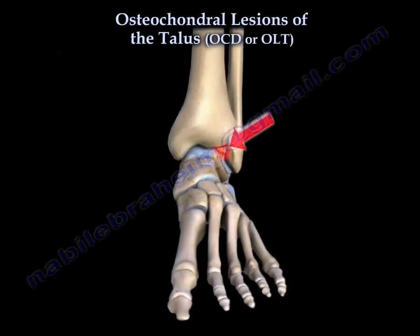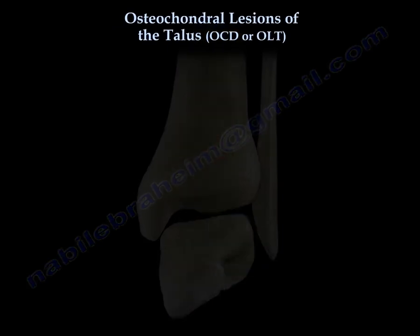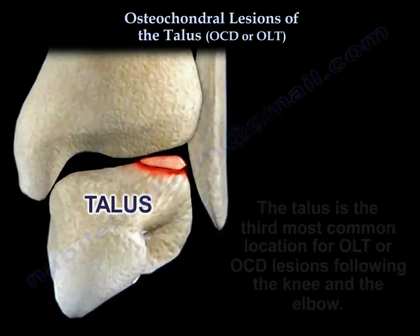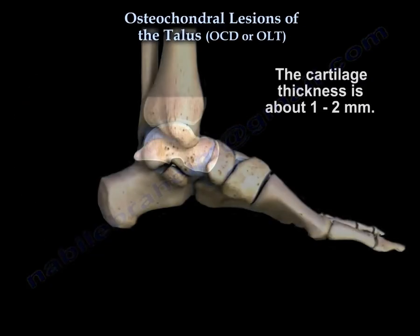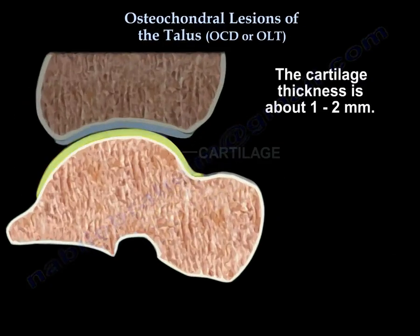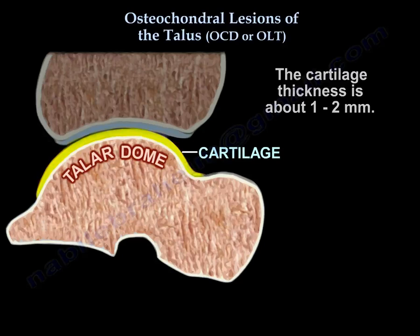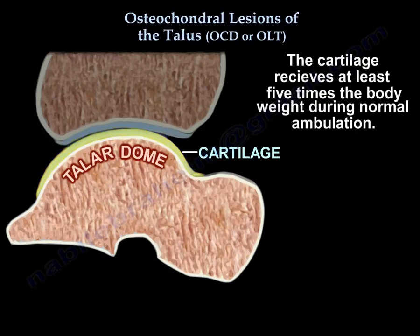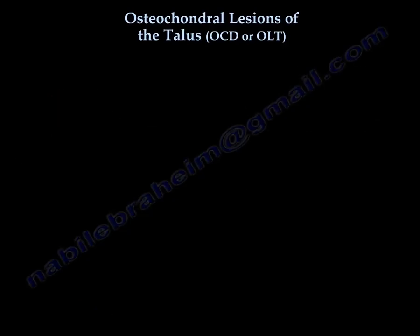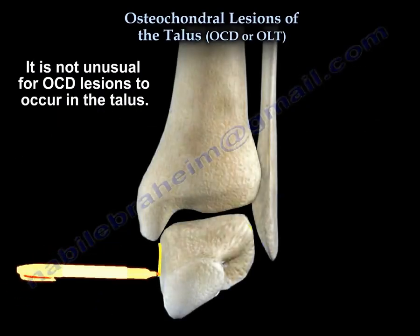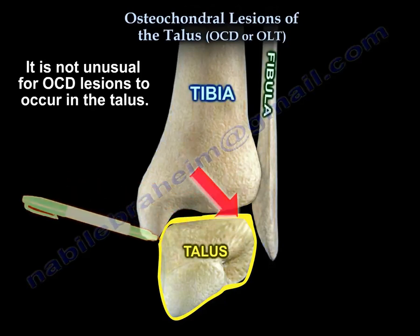Osteochondral lesions of the talus. The talus is the third most common location for OLT or OCD lesion, following the knee and the elbow. The cartilage thickness of the talus is about 1 to 2 mm. It receives at least 5 times the body weight during normal ambulation, and about 60% of the surface of the talus is covered by cartilage. It is not unusual for osteochondral lesions to occur in the talus.